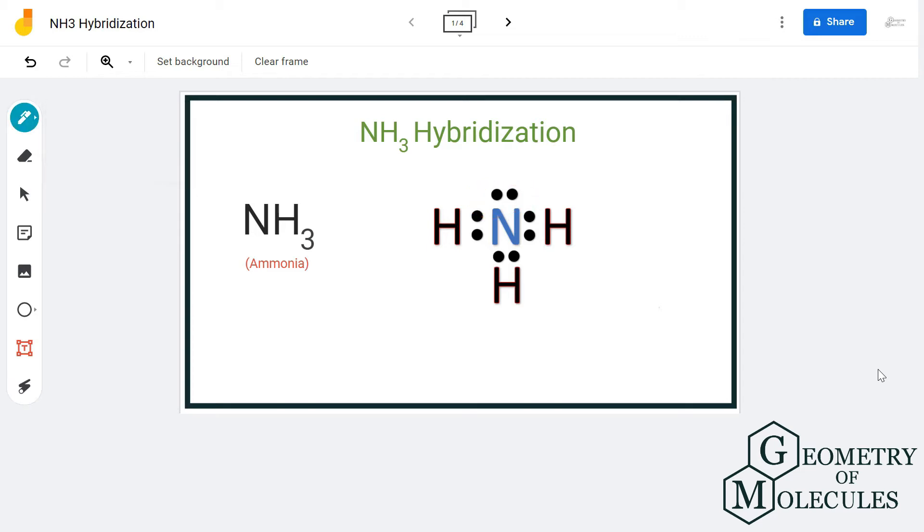To check the hybridization or to know the hybridization, we will look at the steric number. If you calculate the steric number, we use this formula in which we calculate the number by looking at the number of lone pairs on the atom plus the number of atoms attached to it.